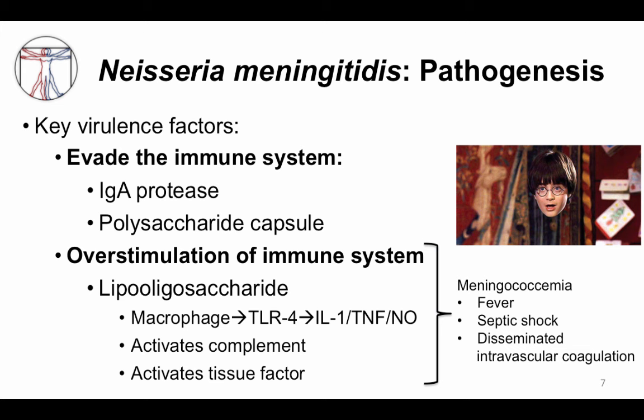Clinically, in meningococcemia this causes fever, septic shock, and disseminated intravascular coagulation. Fever comes from IL-1 release, septic shock from activation of nitric oxide causing vasodilation, and DIC from activation of complement and tissue factor.